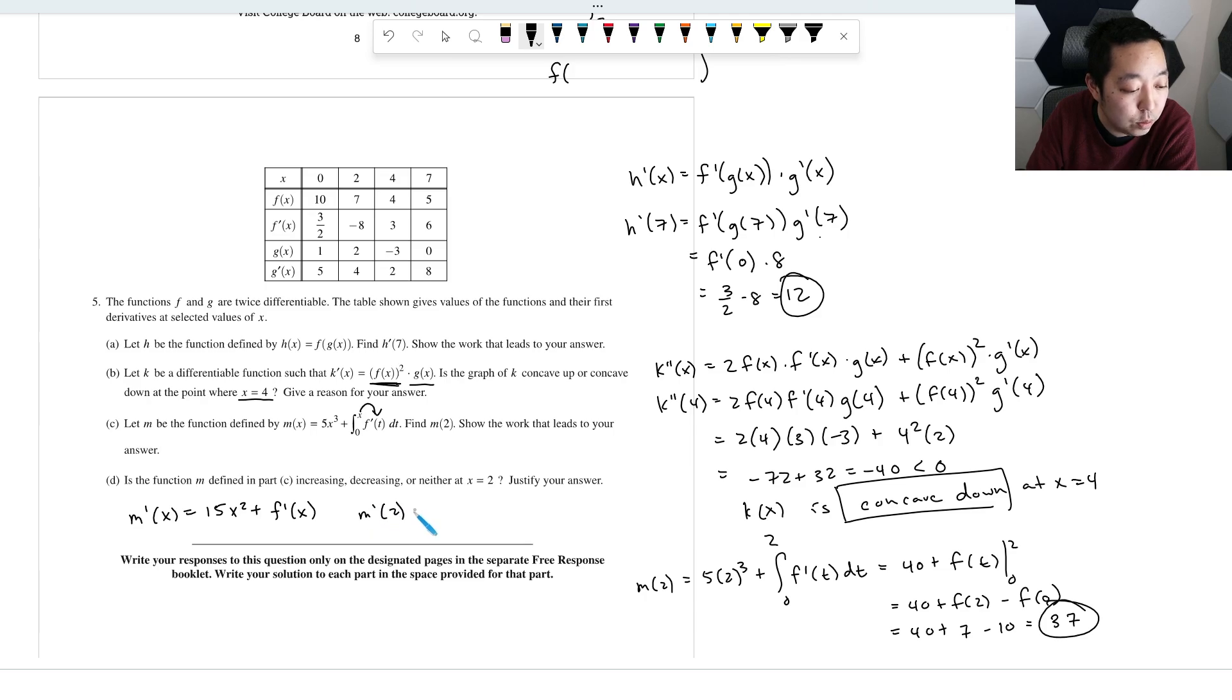So that's what the derivative of that is. So then m prime at 2 is going to be 15 times 2 squared plus f prime at 2. f prime at 2 is negative 8, so this is going to be 4 times 15. That's 60 minus 8. That's equal to 52. That's greater than 0, so it is increasing.